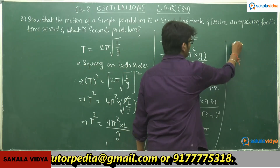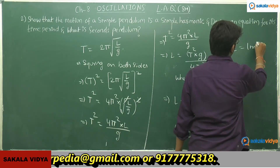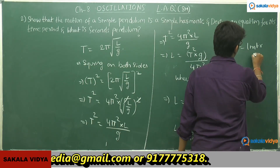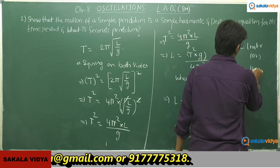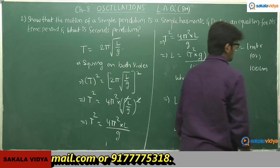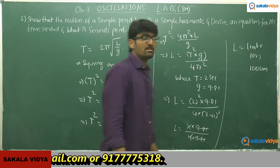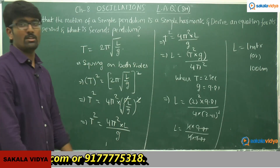The length of the seconds pendulum is 1 meter or 100 centimeters, calculated using time period T = 2 seconds and g = 9.81 m/s².